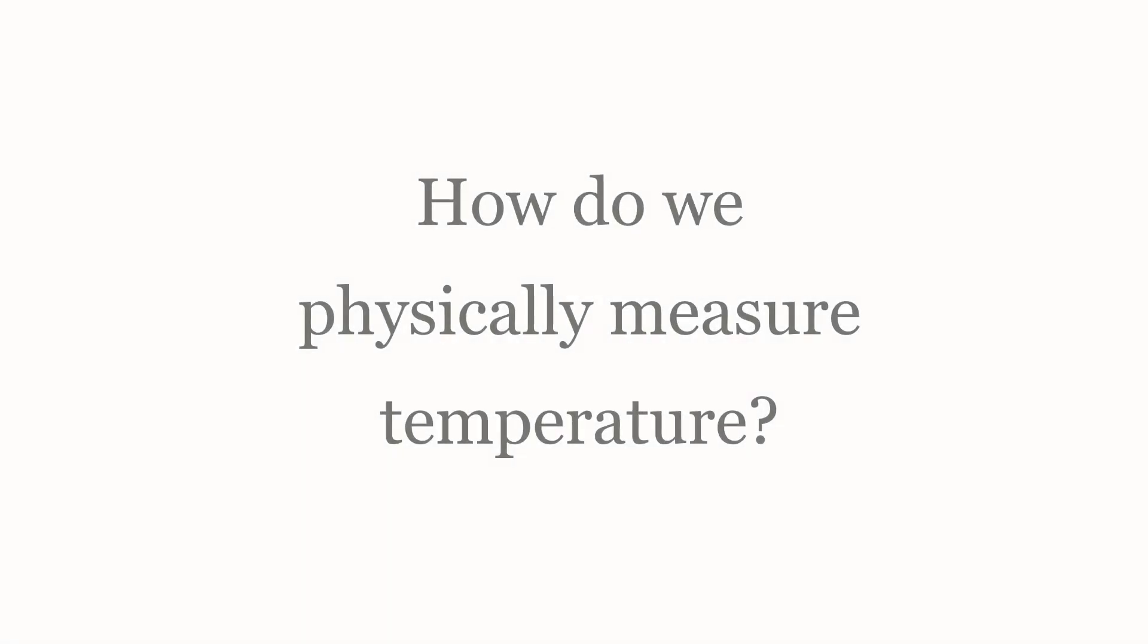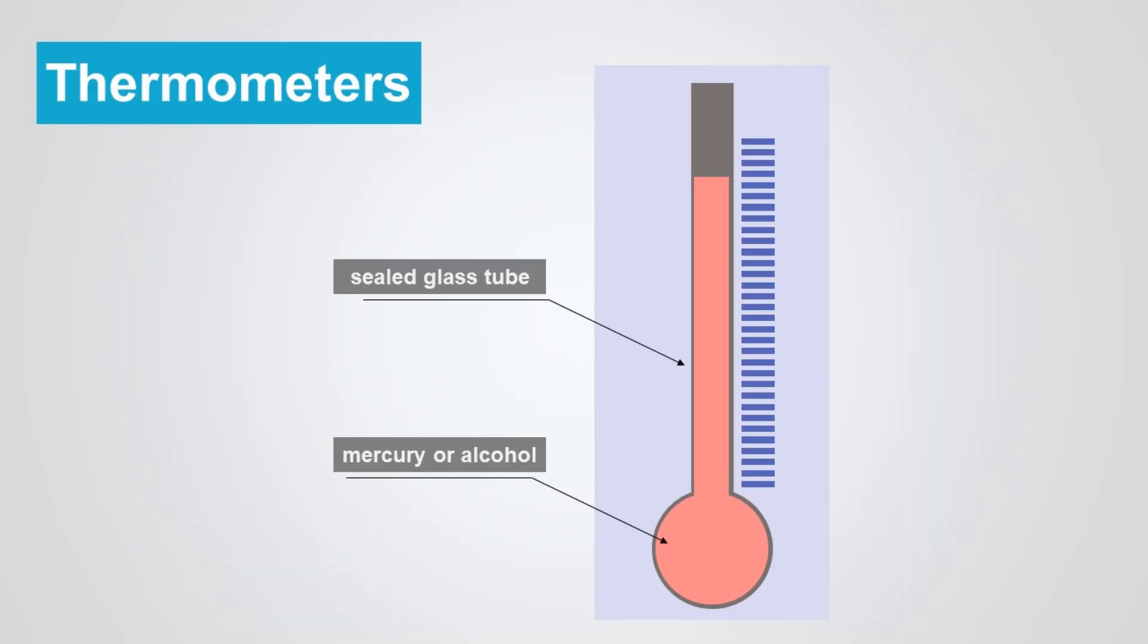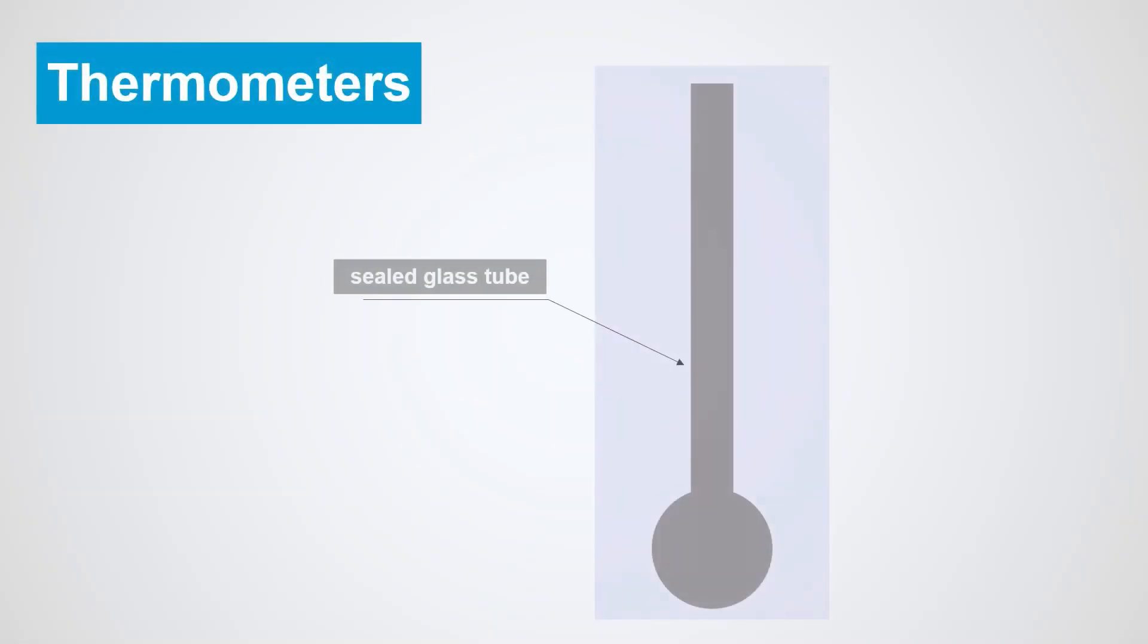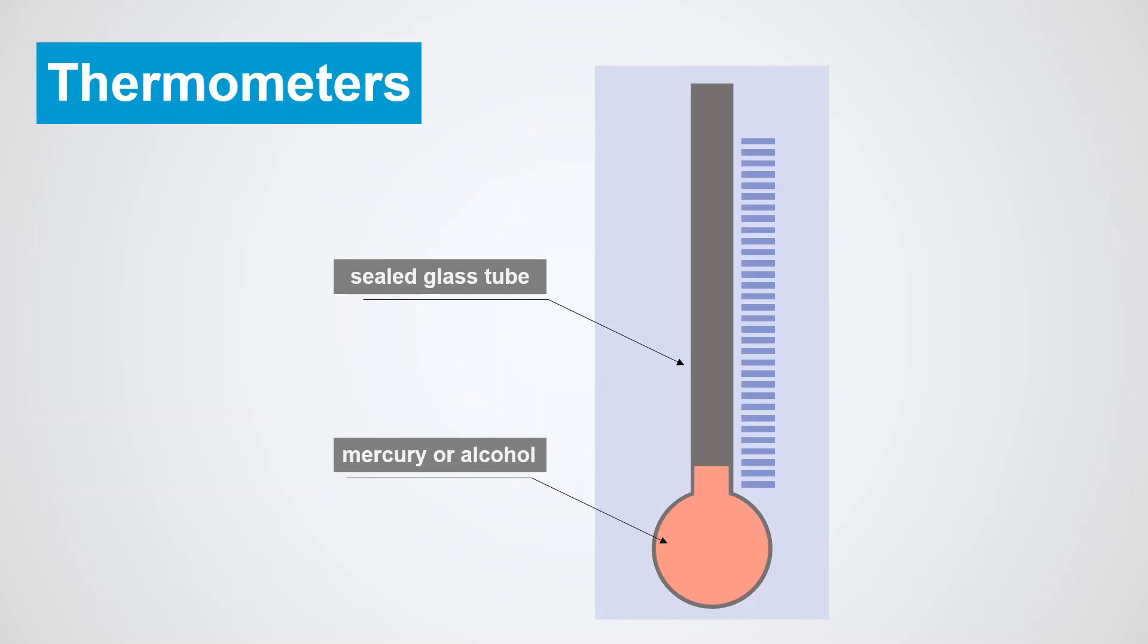So how do we physically measure temperature? We all know that we can measure temperature using a thermometer. This is a very basic design and is used for hundreds of years. Thermometers consist of a sealed glass tube that is partly filled with some liquid like mercury or alcohol. As heat is applied, the liquid expands and rises in the glass tube. The height of the glass tube is divided up and marked with correlative temperatures.